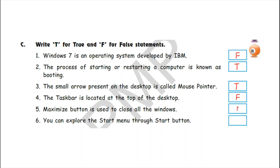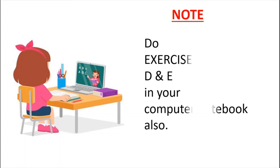Number six: you can explore the start menu through start button — correct. So write here T for true. Children, now the next exercises D and E. You all will be writing in your computer notebook also.